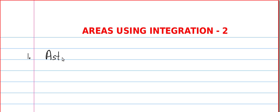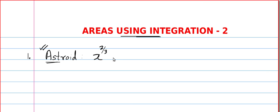This has been repeated in many past exam papers. I just checked the past year papers, and in many of them they were asked to find the area of the asteroid using integration. But I'm sure some of you might not be familiar with the curve asteroid. The equation of the asteroid is x^(2/3) + y^(2/3) = a^(2/3).